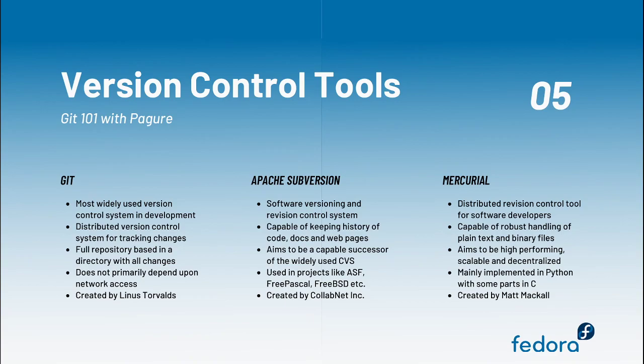Being distributive in nature, you can track changes made to your code base and all of the metadata of changes made are stored in a single directory. This makes it an excellent option since network dependency is not an issue at all. Moving on to Apache Subversion, or SVN — it is a software versioning and revision controlling system capable of keeping history of code, documentation, and web pages alike. It was created by Collabnet Incorporated to be a capable successor of CVS and is used in projects like ASF, Free Pascal, and FreeBSD.